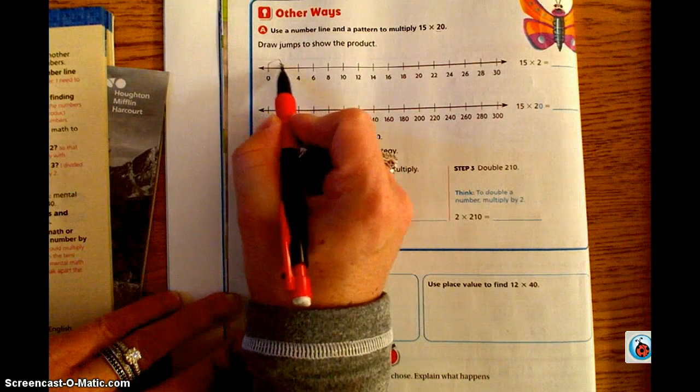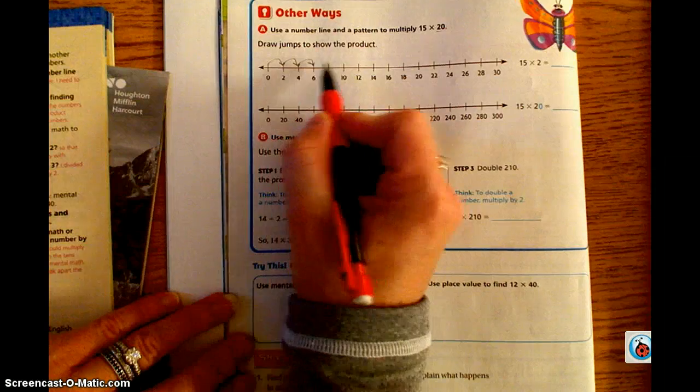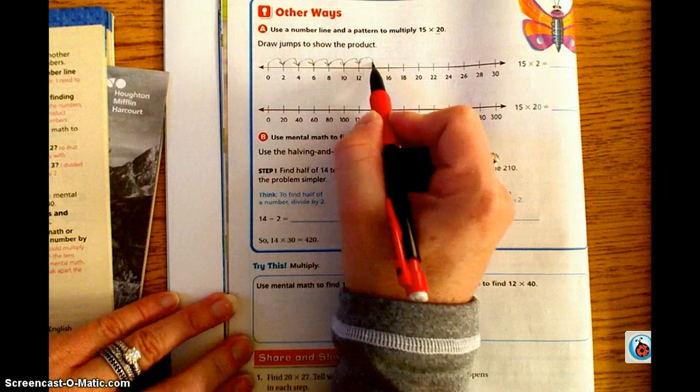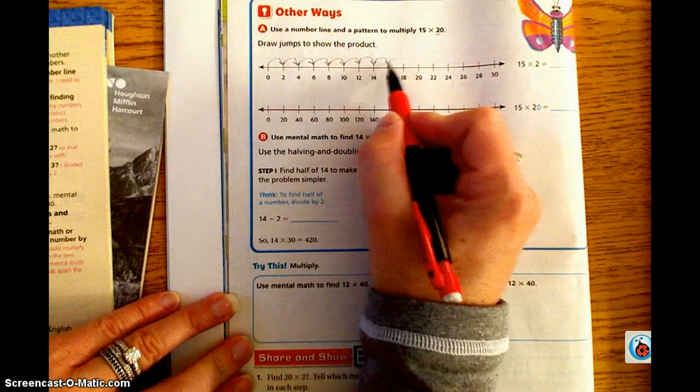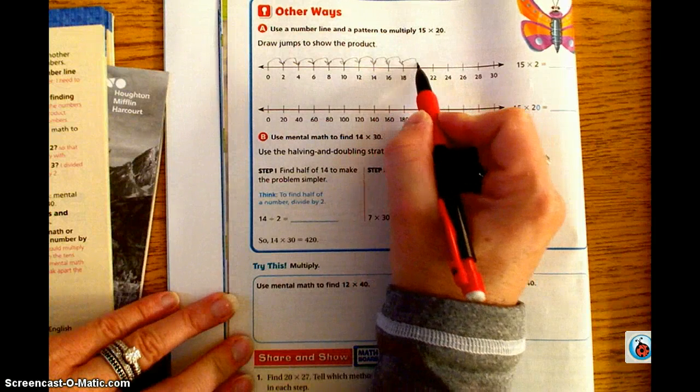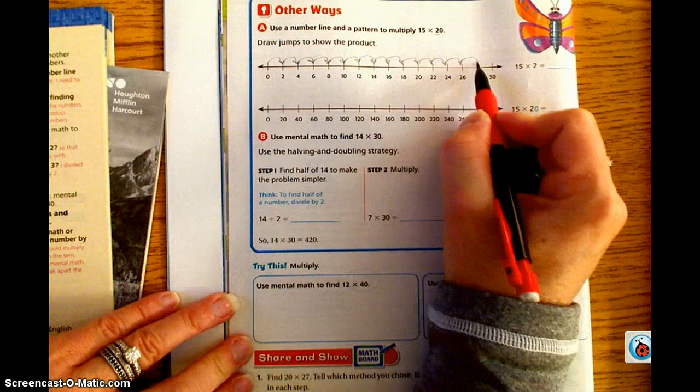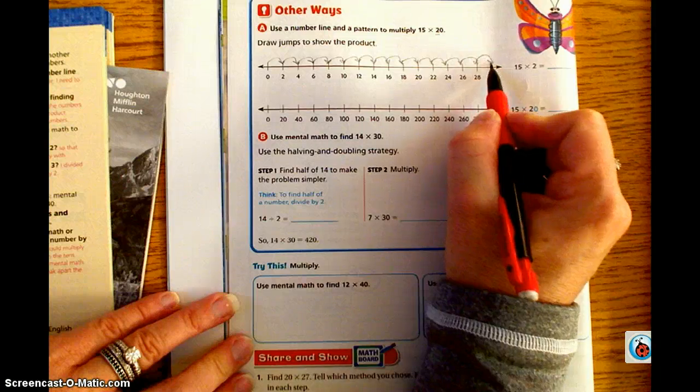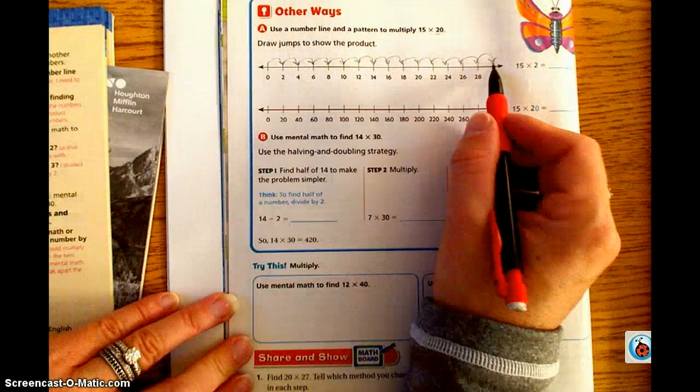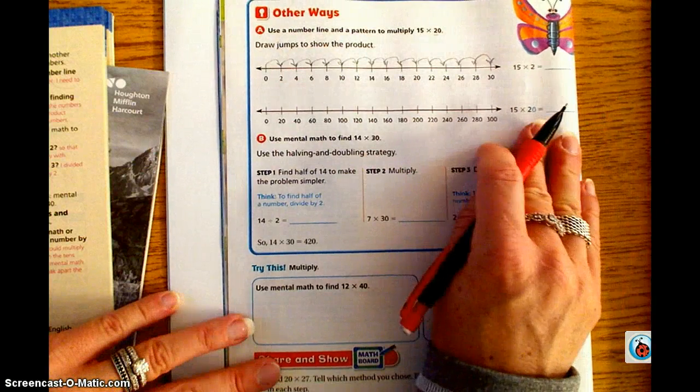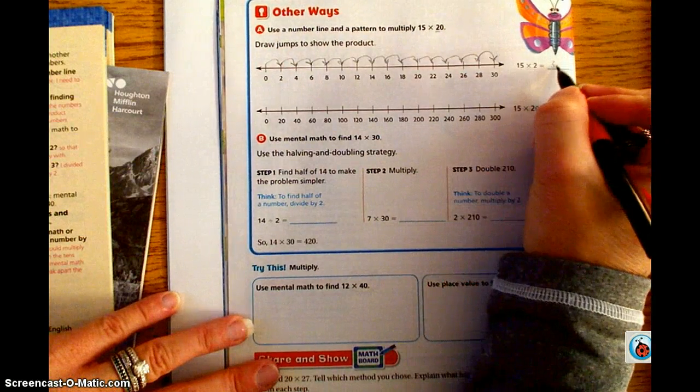So 2, 4, 6, 8, 10, 12, 14, 16, 18, 20, 22, 24, 26, 28, and 30. So that was 15 jumps, two places each. So then that gives us a total of 30.